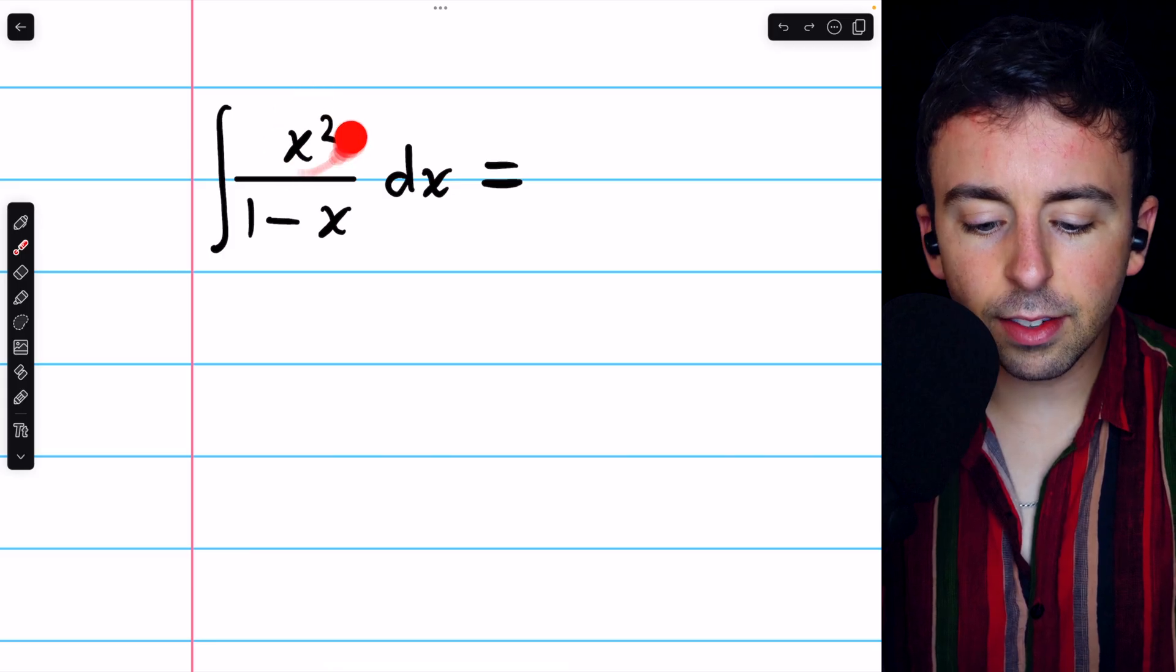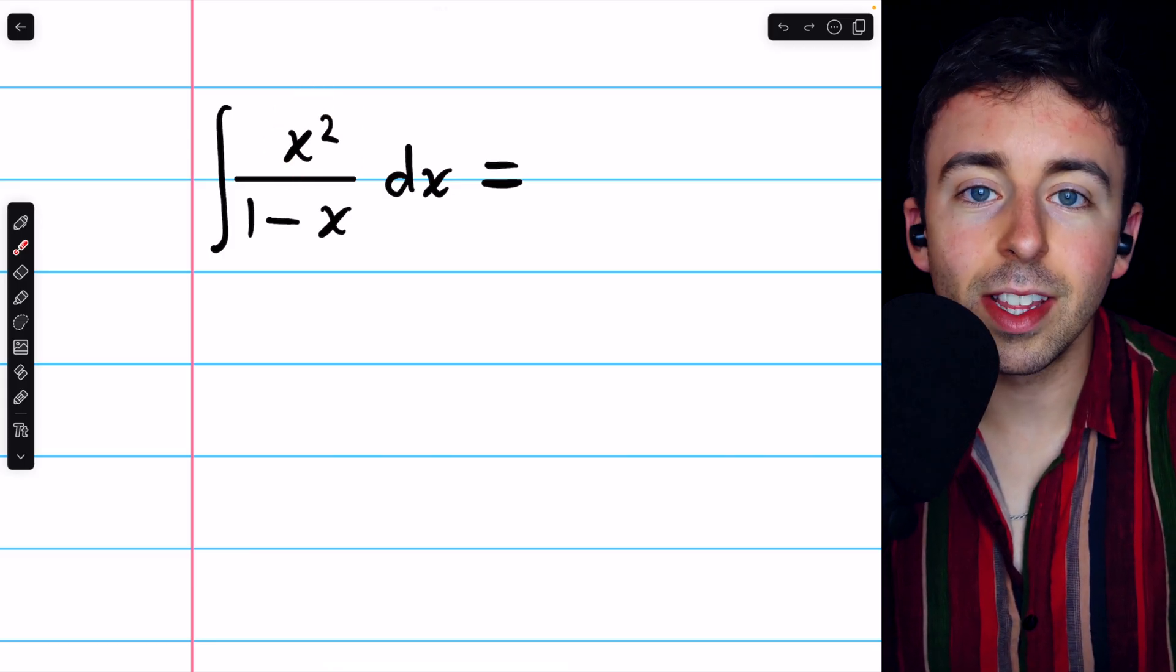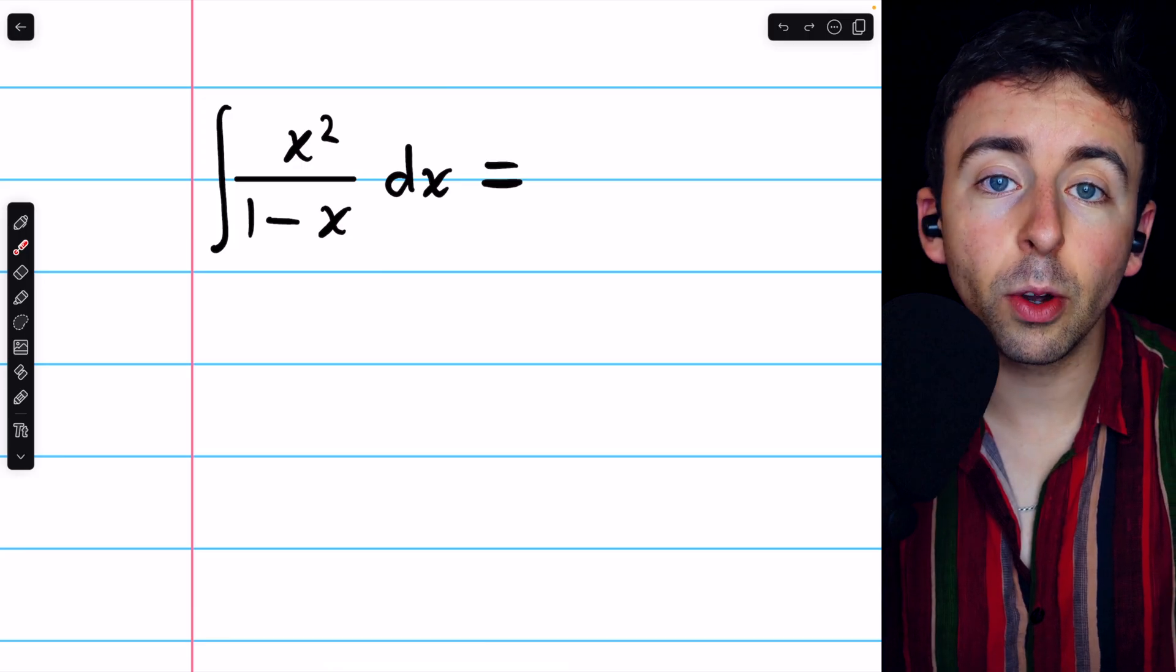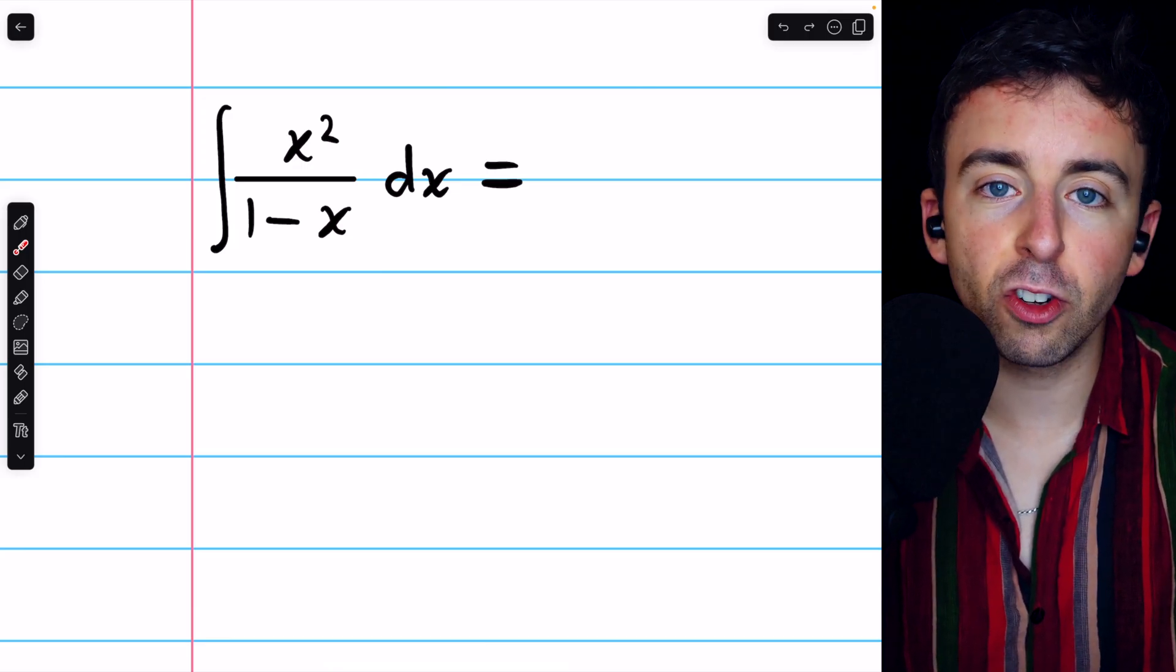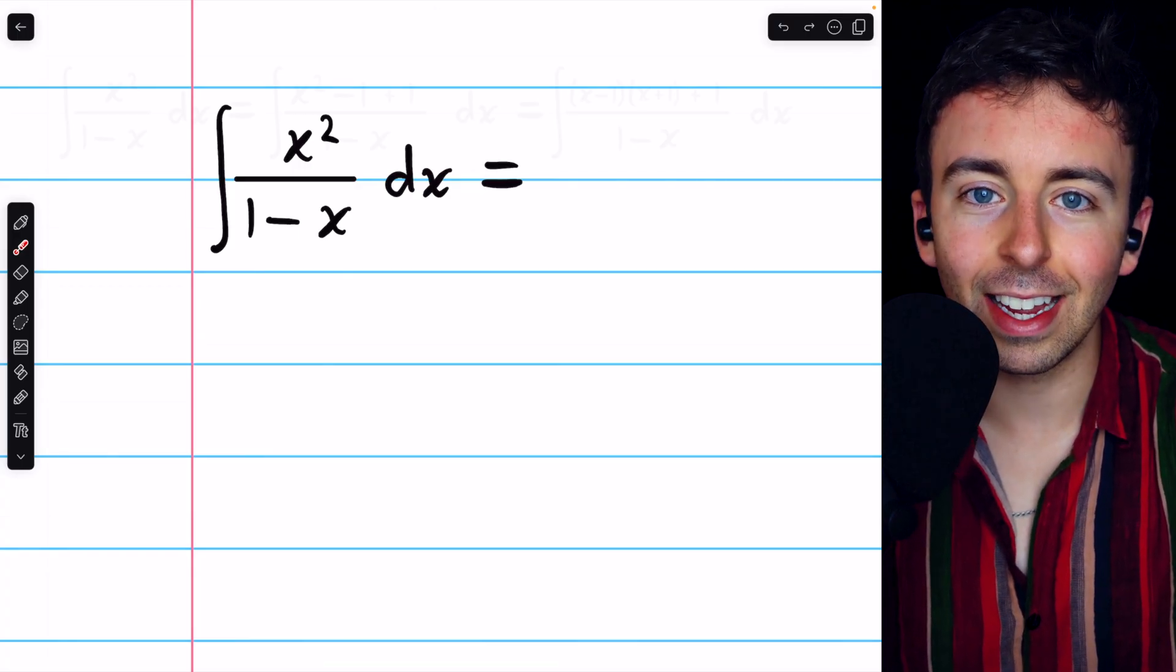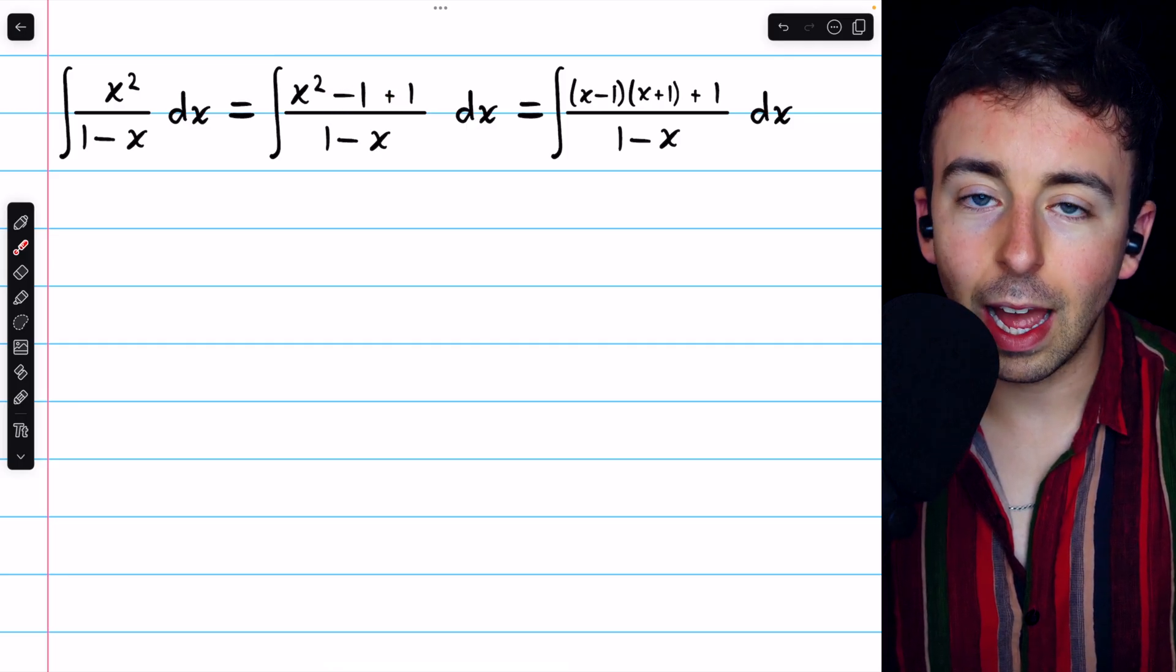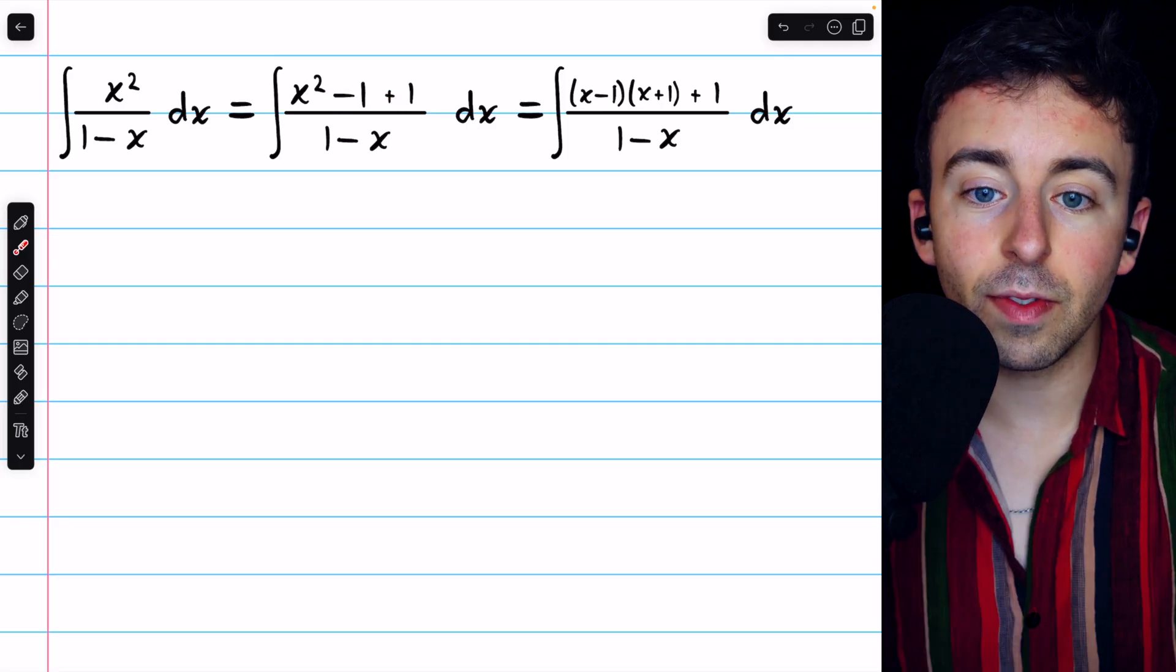Now, of course, there is no minus 1 in the numerator, but we could put a minus 1 in the numerator as long as we also add 1 in the numerator. So in the end, we're not changing anything, but we are making it so that we can start to rewrite things. So in the numerator, I'll put minus 1 and plus 1. Haven't changed anything, so this is totally valid.